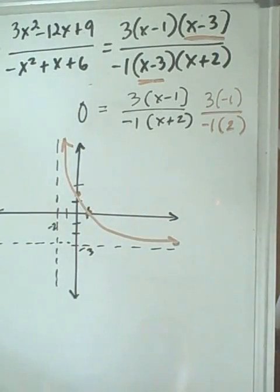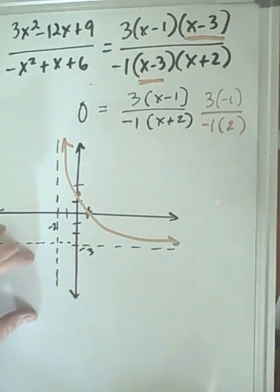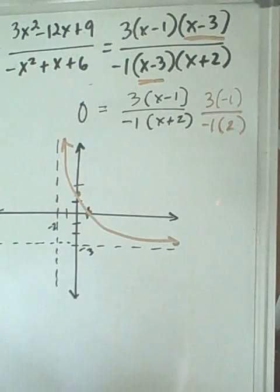Our next thing is to figure out, well, what happens here? Is the other part of the graph on this side or on this side of the two asymptotes? We do that by checking a value that is less than negative 2. For example, let's try negative 3.